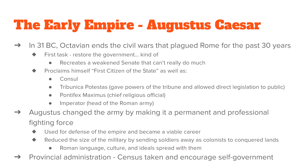This will be a question on the final exam, so make sure you look at it. Octavian renamed himself Augustus and declared himself the first citizen of the state. He also named himself consul — the main legal authority — tribune, pontiff, and imperator. As tribune, he gained the power to directly legislate the people. As pontiff — or Pontifex Maximus — he made himself the chief religious figure. As imperator, he was head of the Roman army.